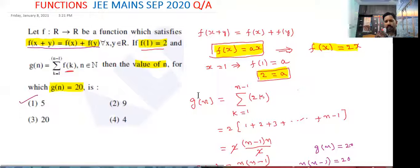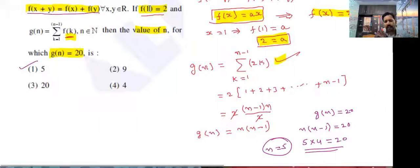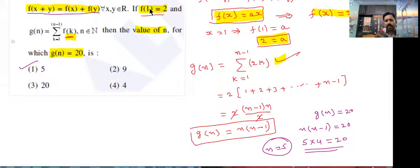Next here g of n is equal to summation k is equal to one to n minus one f of k given. So f of k means two k, substitute, expand, finally you'll get g of n value is n into n minus one.